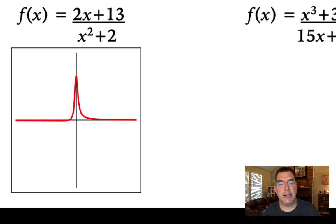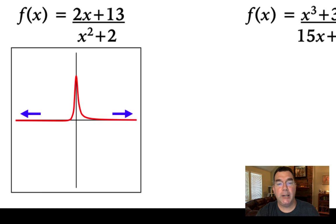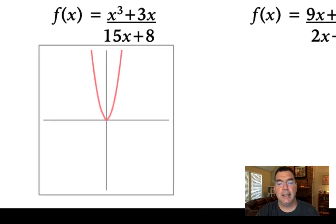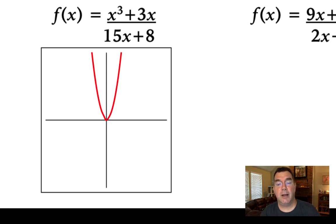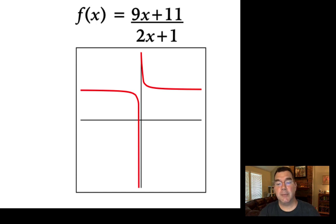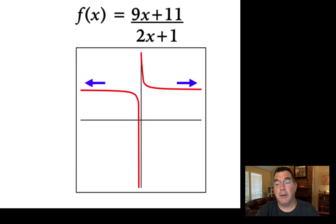Graphing the first function, you'll notice the y values level off as you look to the very left and very right — they level off at y equals 0. So as x approaches positive or negative infinity, the y values approach 0. In the second example, the y values do not level off; they go off into infinity. In the third example, similar to the first, but the y values level off at a specific number — about 4.5.